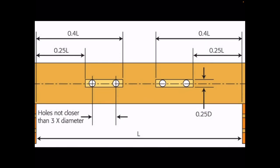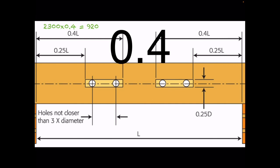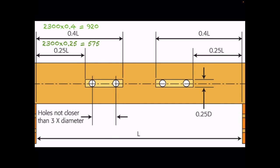Let's look at that more closely. The length we chose is 2300 millimeters. Multiplying by 0.4 gives 920 millimeters as the furthest-away point. Multiplying by 0.25 gives 575 millimeters as the innermost point. So you can drill your hole anywhere between 575 millimeters and 920 millimeters from the edge of the joist — that's what the diagram is telling you.